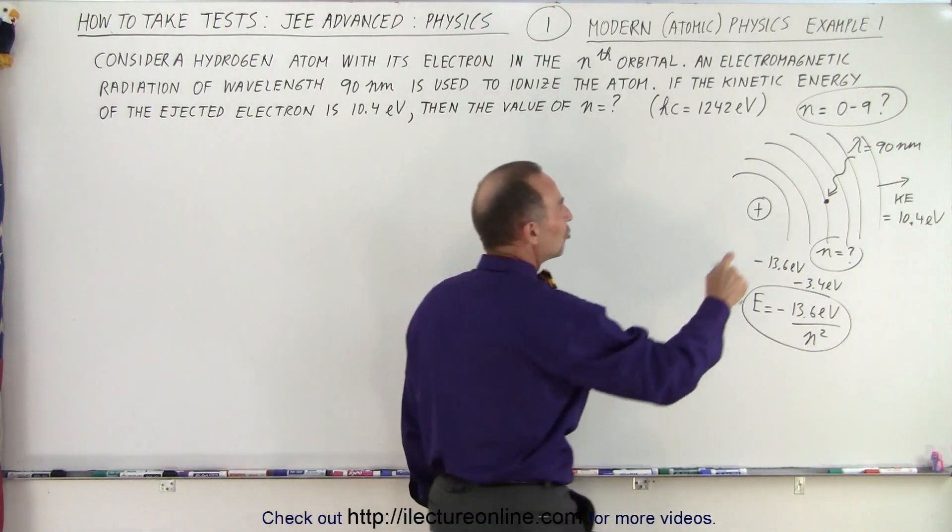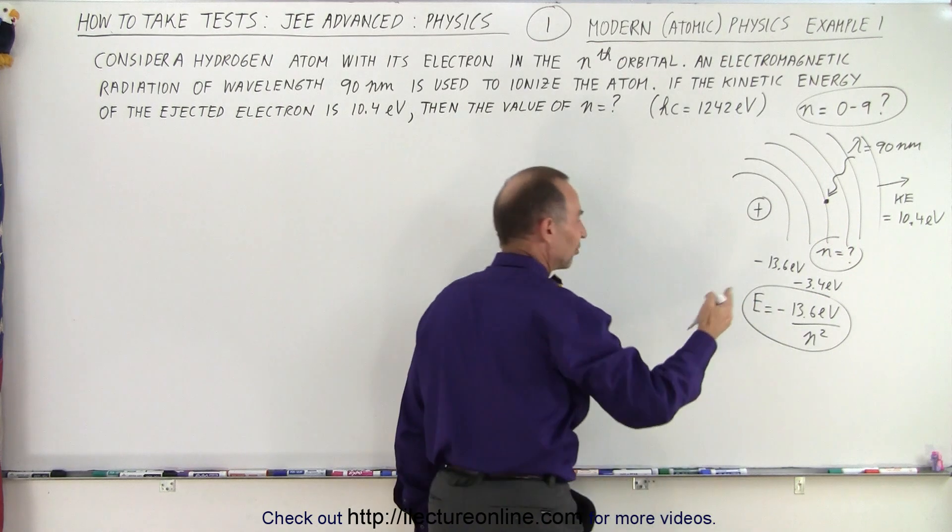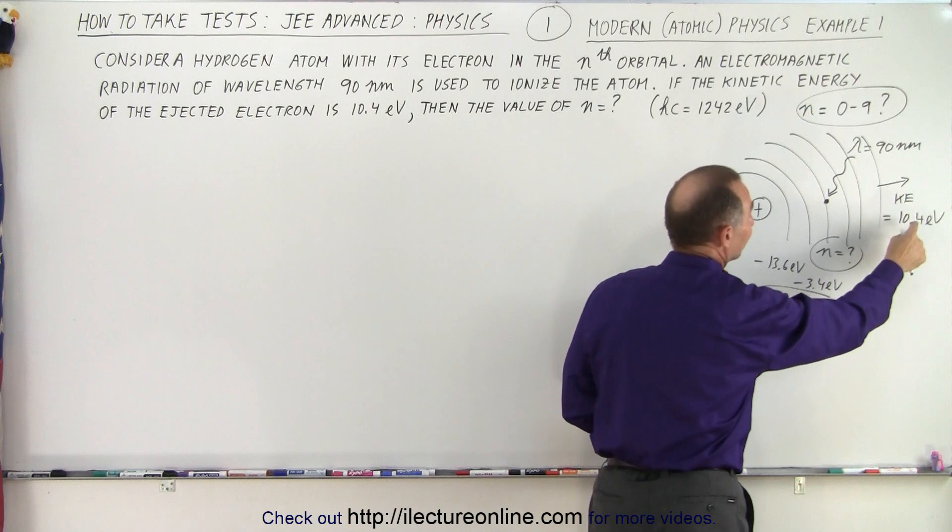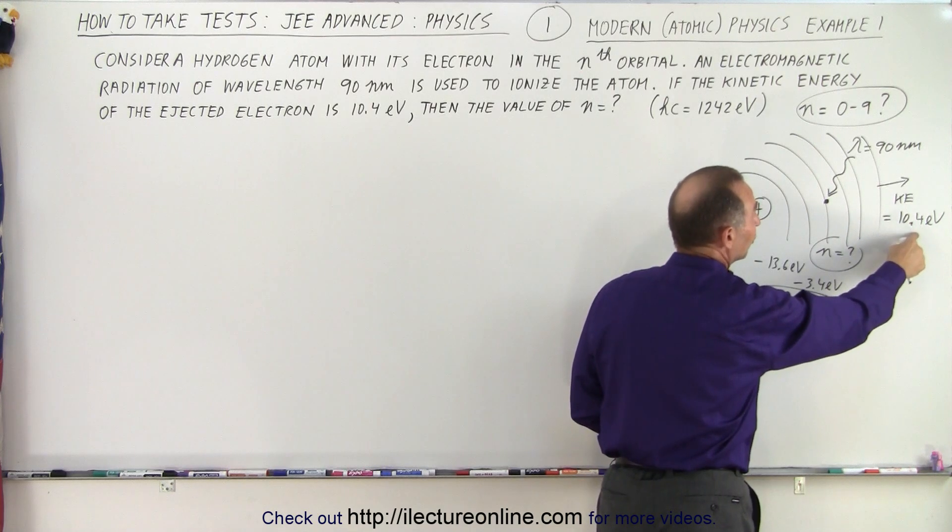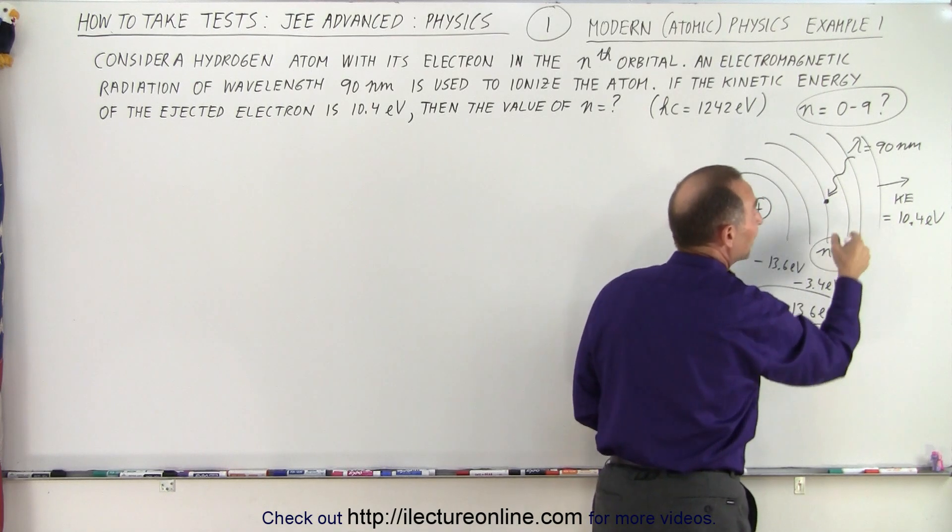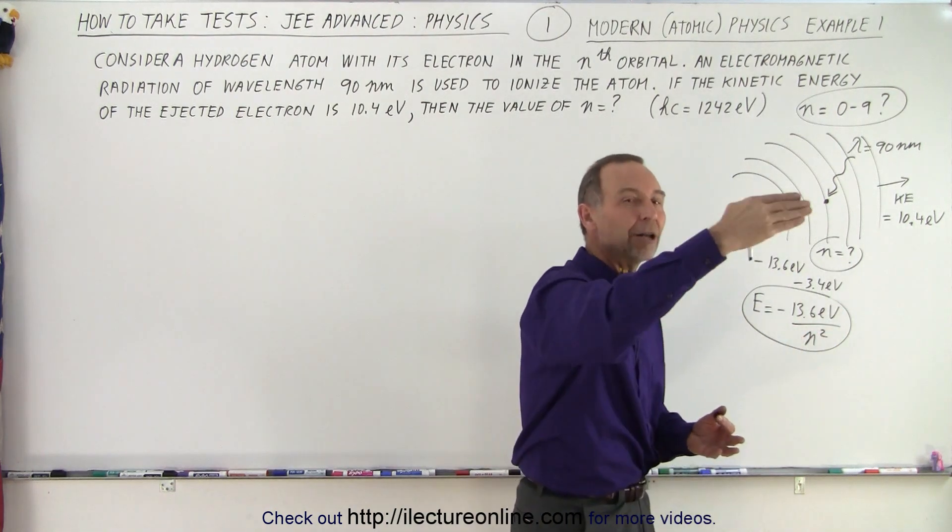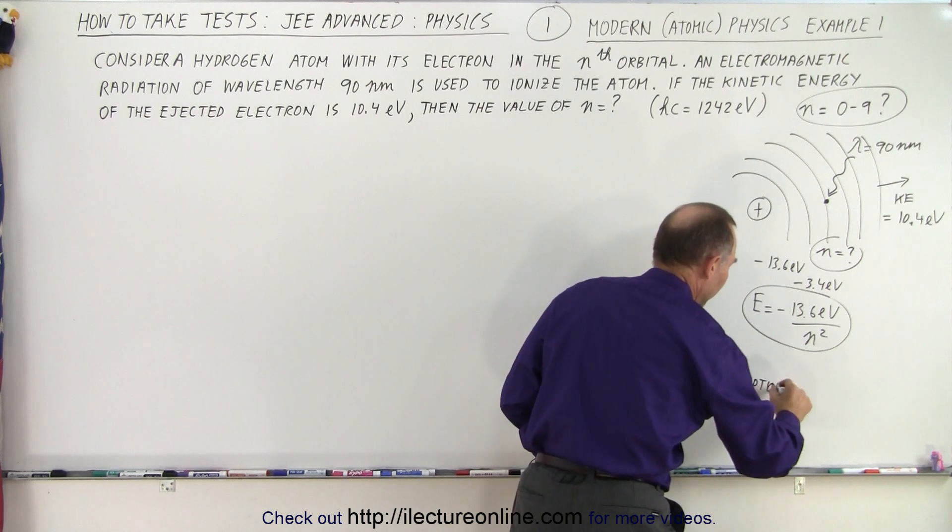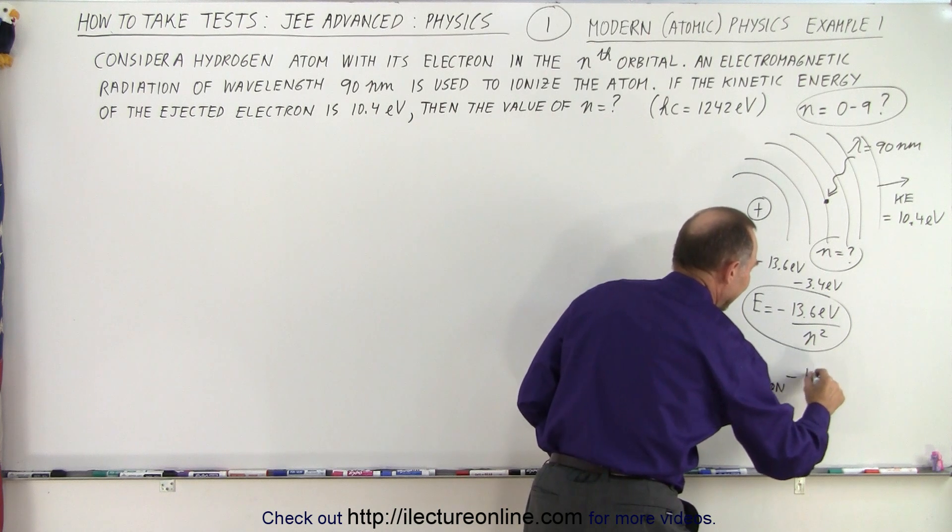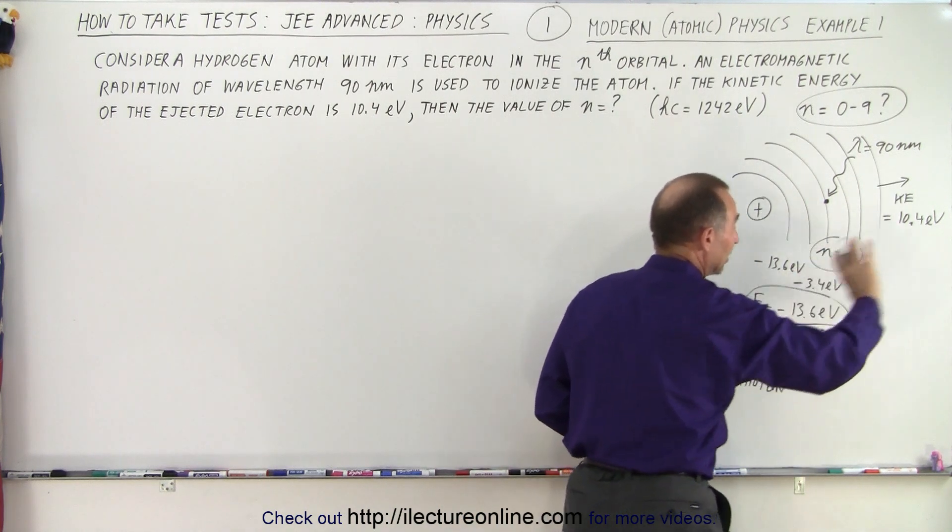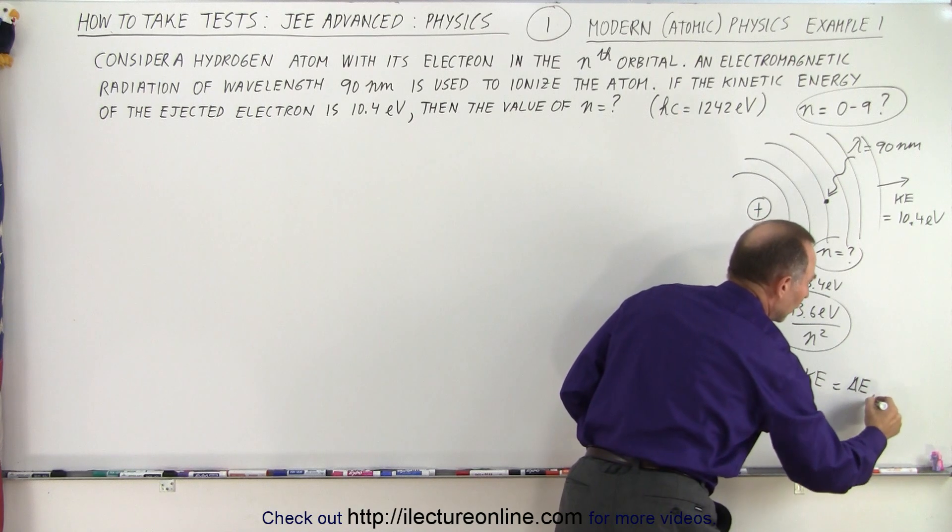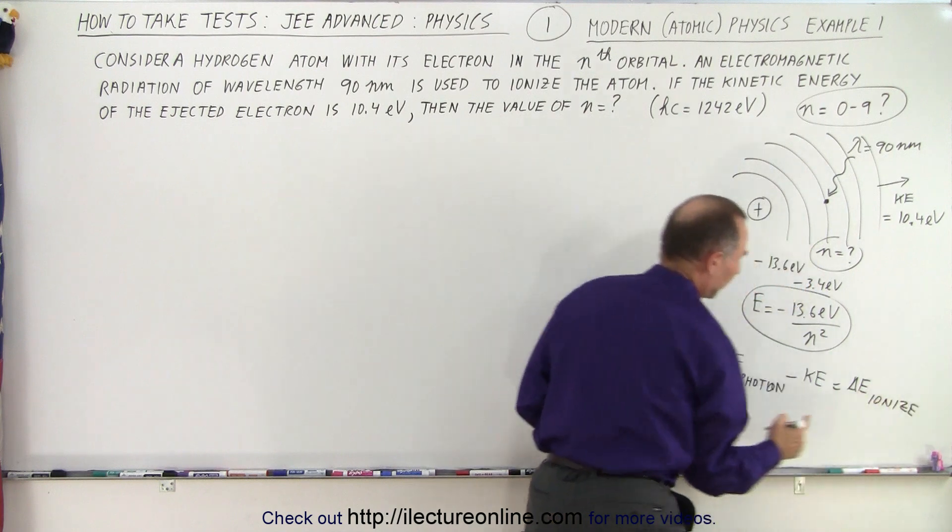Let's find out what the energy is of the photon. So what's the strategy? We'll figure out what the energy is of the photon, we then subtract from that the energy that's given to the electron kinetic energy, and then the difference will be the amount needed to get it out of the orbital. So the way we're thinking about it is this, that the energy of the photon minus the kinetic energy that is given the electron as it leaves the atom is equal to the delta energy required to ionize it.